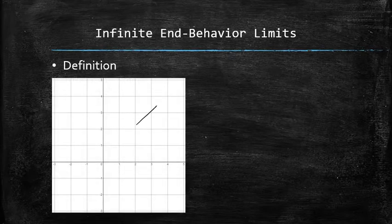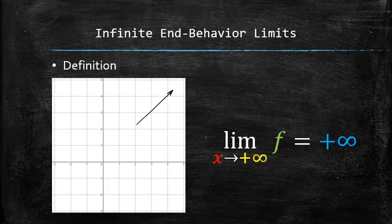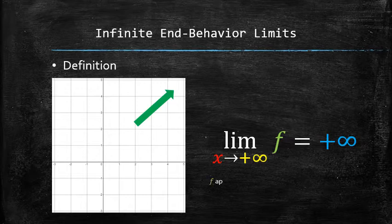We associate the following behavior with the following limit statement called an infinite end-behavior limit. Note that we do not suggest that the graph must approach positive infinity in any particular way — it can approach it faster or slower for different functions. Either of these behaviors are described with the same limit statement, and schematically can be expressed with an arrow pointing in the upper right corner of the graph. We say f approaches positive infinity as x approaches positive infinity.